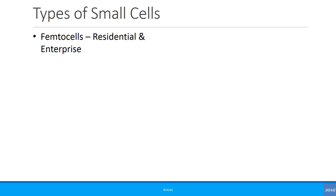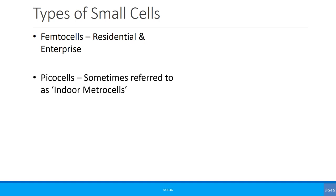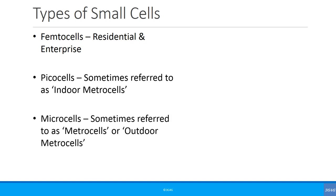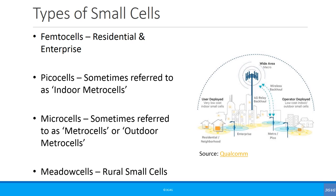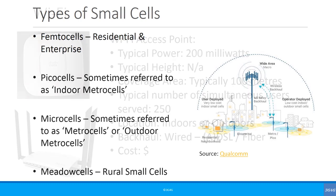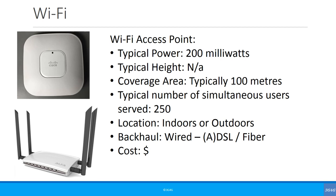Before the term 'small cells' became popular, 'femtocells' was the dominant term. Types of small cells include residential and enterprise femtocells, picocells (also referred to as indoor metro cells), microcells (also referred to as metro cells or outdoor metro cells), and meadow cells (mostly referred to as rural small cells). This is illustrated nicely in a picture from Qualcomm showing all these different kinds of small cells.